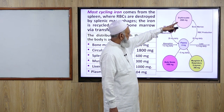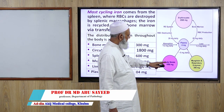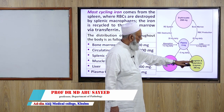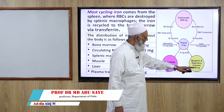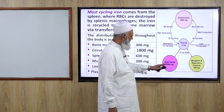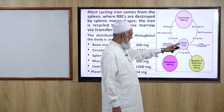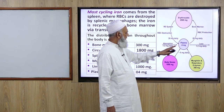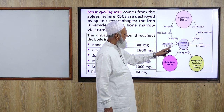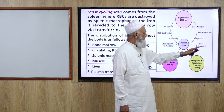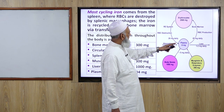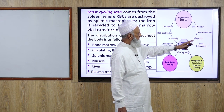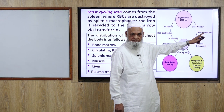Iron is distributed among erythrocytes, plasma, and body stores mainly in the liver. Myoglobin and respiratory enzymes account for 300 mg; liver stores 1000 mg; plasma 4 mg. Absorption is 1 to 2 mg daily; daily loss is 1 to 2 mg; and 20 mg is used by bone marrow daily for RBC production.